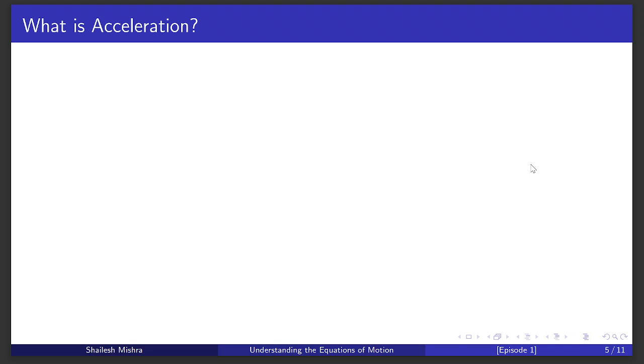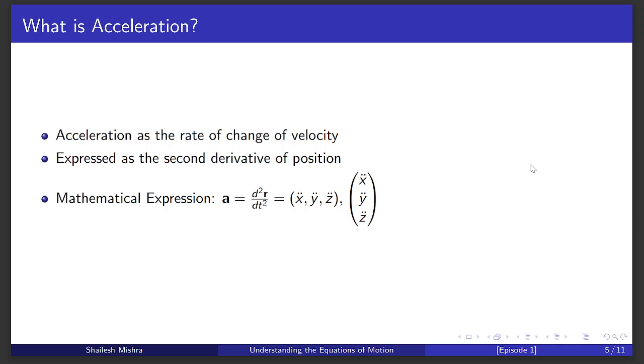Then comes acceleration. It tells us how quickly the velocity changes. This is the second time derivative of the radius vector, noted as a equals d²r/dt² or a equals r̈.